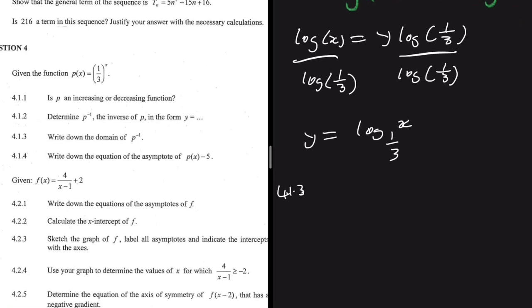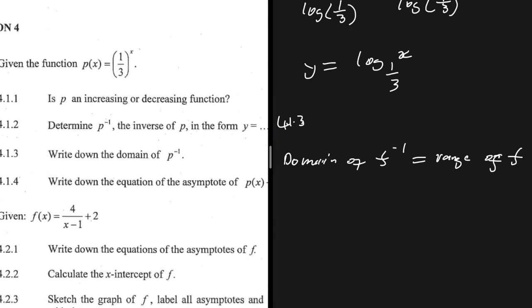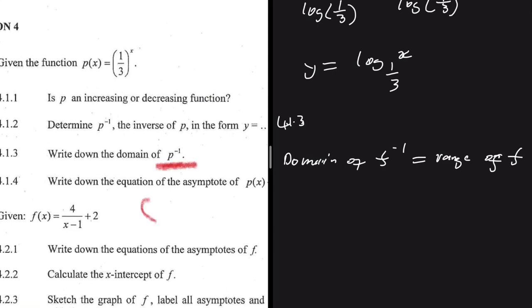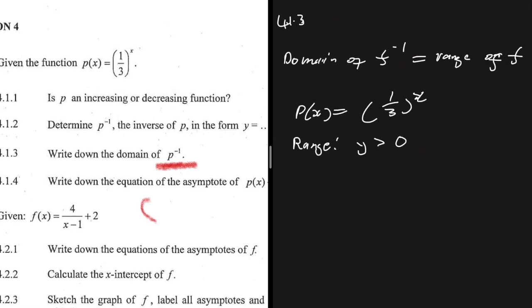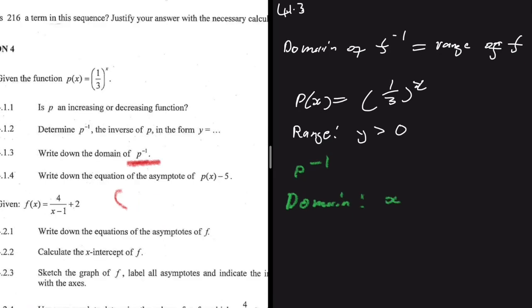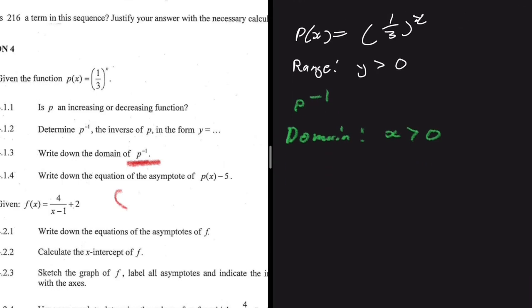For question 4.1.3, write down the domain of p inverse. What you need to know is that the domain of f inverse equals the range of f. So we find the domain of p inverse by finding the range of p. For p(x) = (1/3)^x, the range is y > 0. Therefore, the domain of p inverse is x > 0.